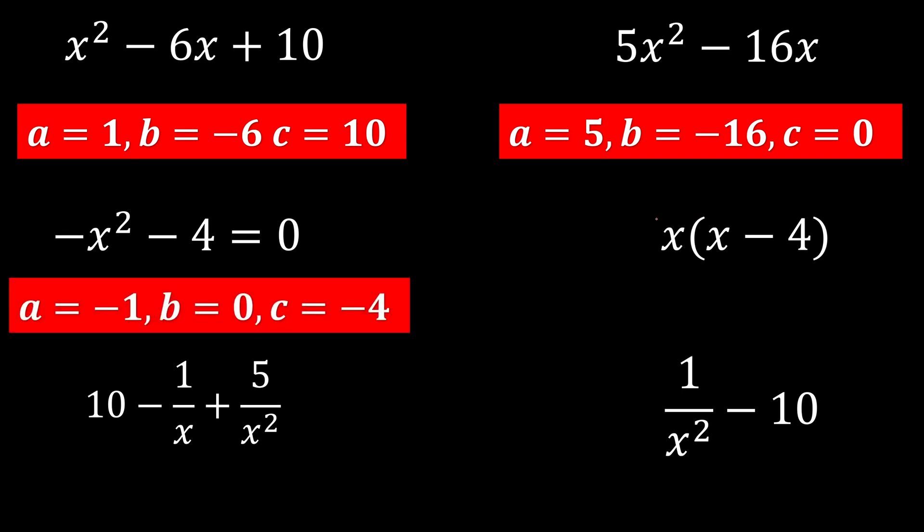If they give you something like this, indirectly this is a quadratic formula. Because after expanding, this is x squared minus 4x. If there is no constant, plus 0. So a is 1, b is negative 4, and c is 0.